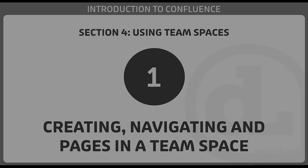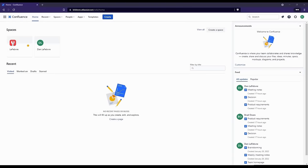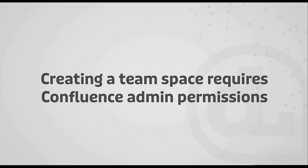In our last section, we looked at creating and navigating our personal space. Now what we're going to do in this video might seem familiar, and for good reason — the process is very similar with team spaces. One big difference in creating a team space compared to a personal space has to do with permissions. In order to create a team space, we have to have overall administrative permissions inside of Confluence — that's different from a personal space where we don't need that.